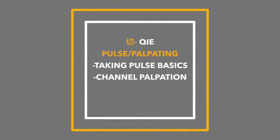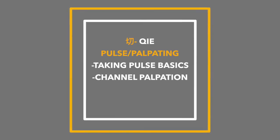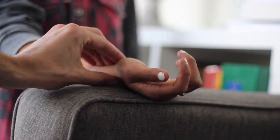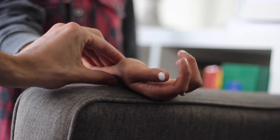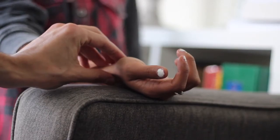The last skill, qie, is palpation. The most famous form is pulse diagnosis and channel palpation. In pulse diagnosis, the physician feels three areas of the radial artery, assessing not only the strength, depth, and width of the pulse, but also each individual position. The first position is known as the cun, the second is the guan, and the third is the qiu. Each of these also correlates to certain organs in the body.